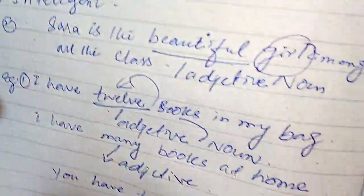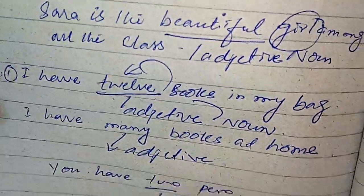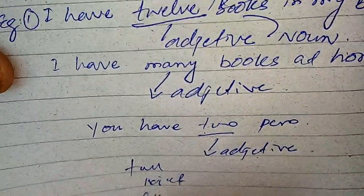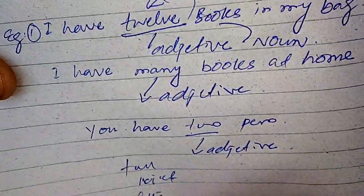Zeeshan is intelligent, Zeeshan is a beautiful boy, Zeeshan is tall, Zeeshan is not fatty. Here 'tall' is also an adjective, and 'fatty' is also an adjective. So these all are adjectives. This is the simple definition of adjective — I hope you learned about adjective.